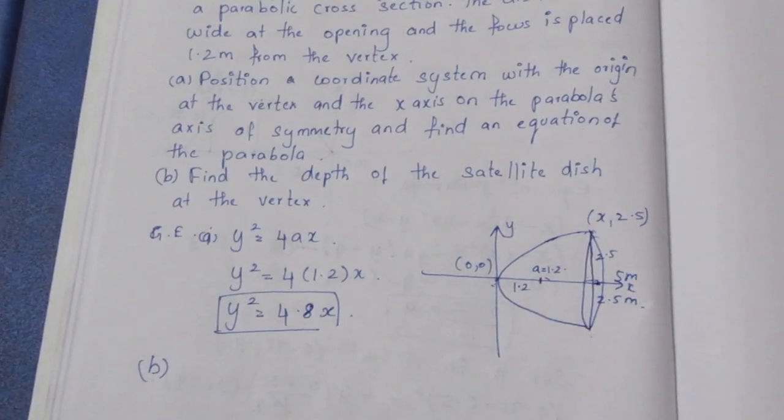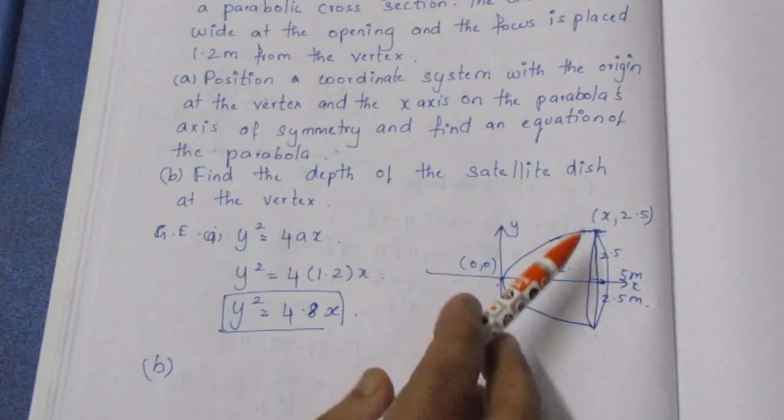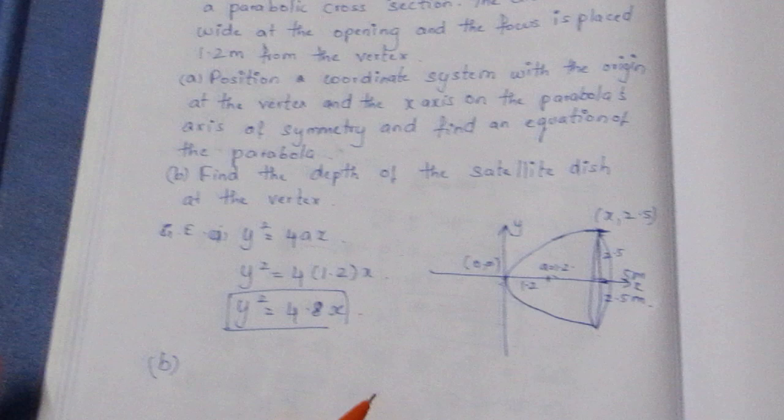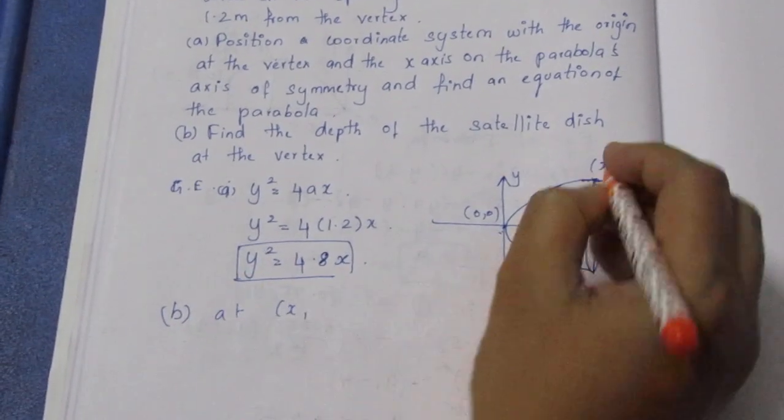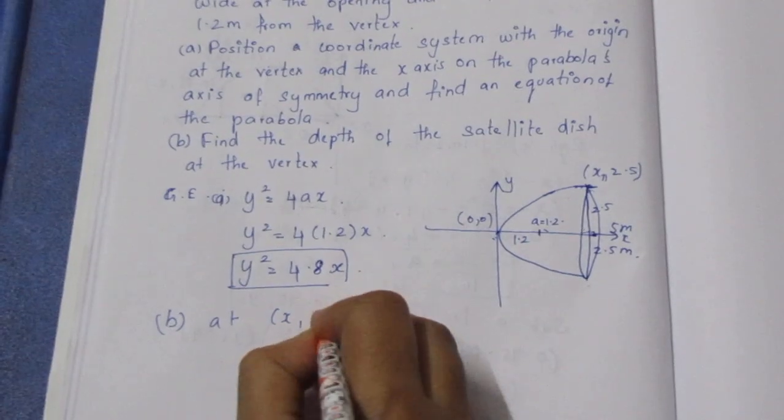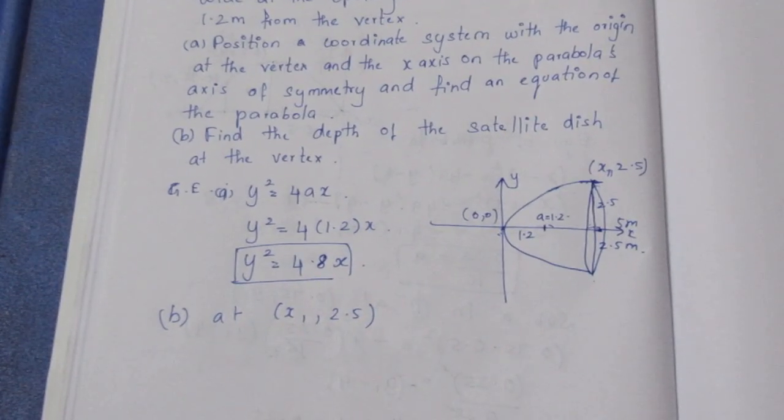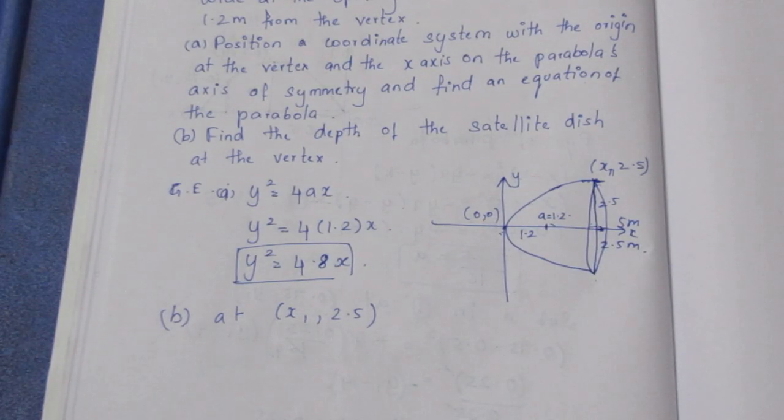Remember the depth which is 2.5. The point is on the parabola. This point is on the parabola. So in terms of x-y, I can substitute it. The point is (x, 2.5). If you have a point on the diagram, you can substitute.